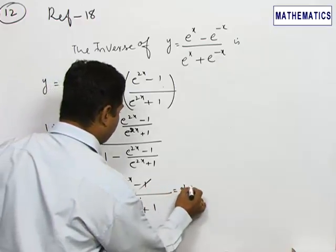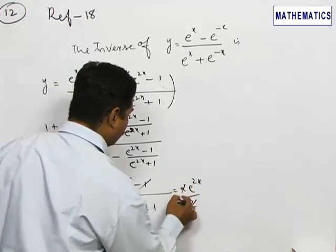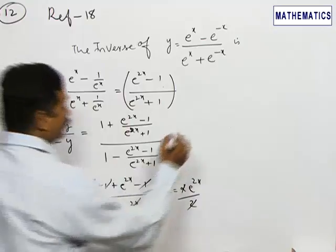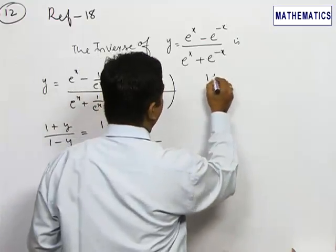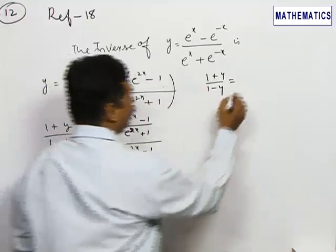We get 2 times e^(2x) divided by 2. The 2s can be eliminated. The function (1+y)/(1-y) can be expressed as e^(2x).